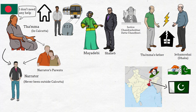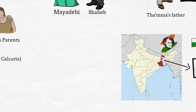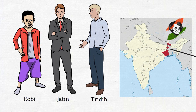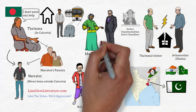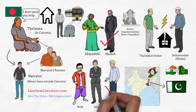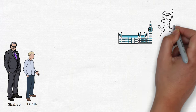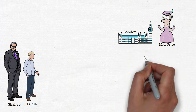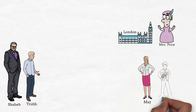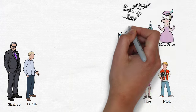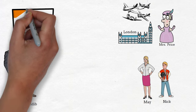Now let's get into the plot of Mayadevi. She is married to Shahib and they have three sons: Jatin, Tridib, and Robi. Shahib undergoes a medical operation, so he along with Tridib goes to London. Tridib is 9 years old and they live in the house of Mrs. Price in London. Later in the novel we come to know that Mrs. Price has a daughter May and a son Nick. They lived there for a few years, but as World War II starts, they return to India.